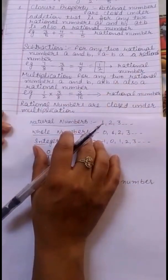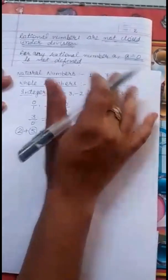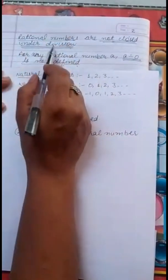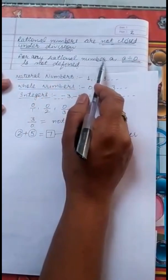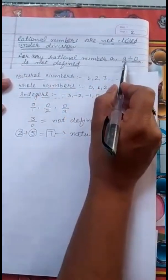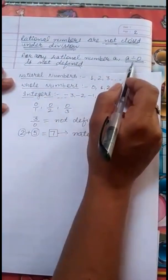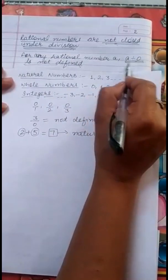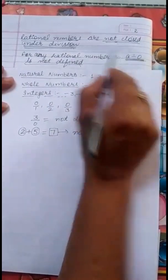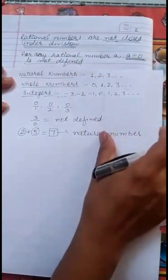Now let us see for division. Rational numbers are not closed under division. For any rational number A, A divided by 0 is not defined. As already discussed, the denominator of any rational number cannot be 0. So rational numbers are not closed under division.